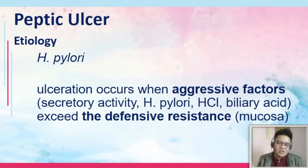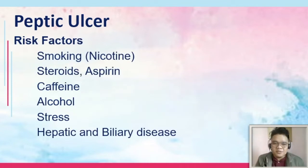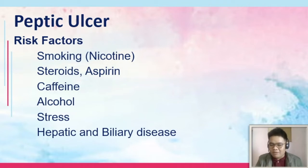The triggers are foods that increase acid production and the presence of infection such as H. pylori. Peptic ulcer disease has several risk factors. One is smoking — cigarette smoking increases blood nicotine levels. With nicotine, there will be vasoconstriction, leading to decreased blood flow to the stomach, and hence decreased production of the mucosal barriers or protection.